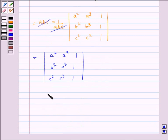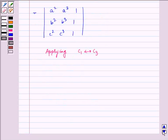Now applying C1 interchanges with C3. So we get minus sign outside and determinant as 1, 1, 1, A cube, B cube, C cube, A square, B square, C square.